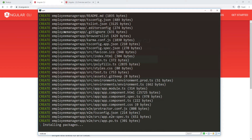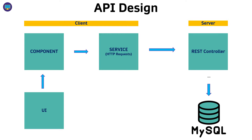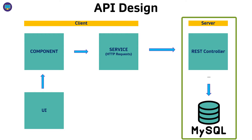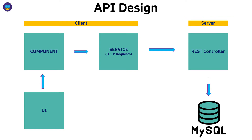While the application is being created, let's take a quick look at the design. This is the same design I showed earlier when working on the back end, but this time we're focusing on the front end. We've already done everything on the server — we built the server, the controller, the database access, and all the endpoints. Now we just need to build the front end.